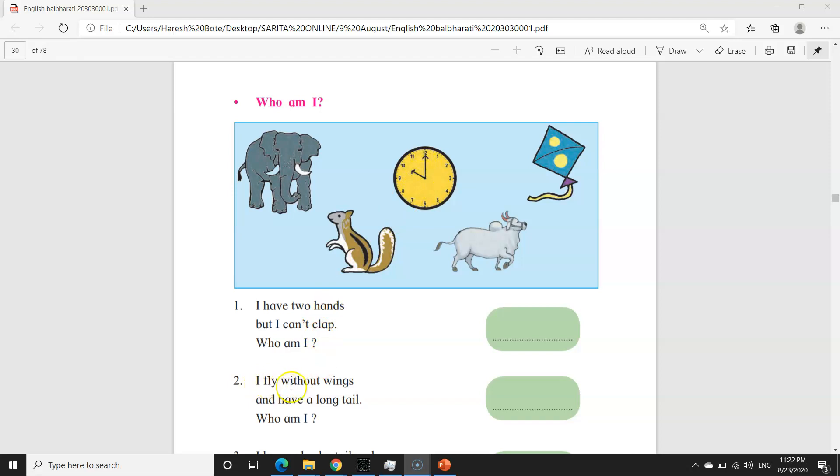Aahe fly wings, wings manzhe pankhe without manzhe cha shivay fly manzhe udne. Mi pankhaan shivay udto. I have a long tail, tail manzhe shepti. Who am I? Kone aahe mi? Mi pankhaan shivay udto parantu mala lamba shepti aahe kay ile chotar? Kite, manzhe patang.